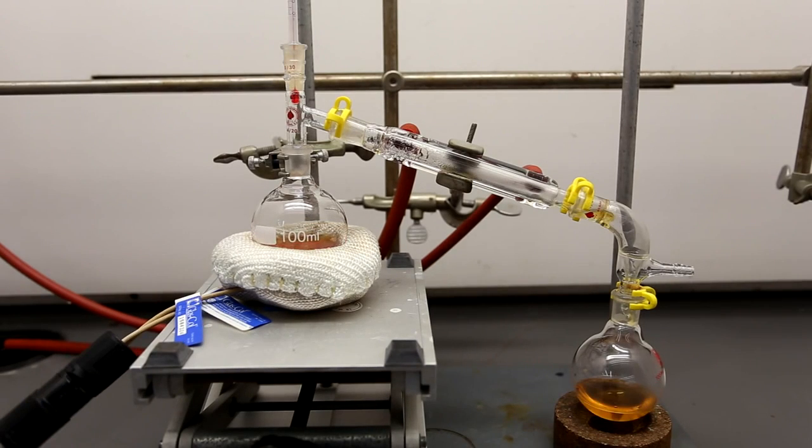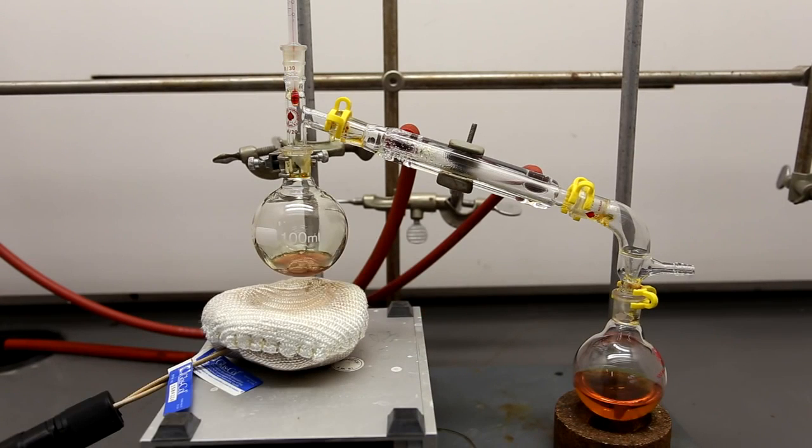At this point, you can replace the collecting flask and boil everything over, or simply remove the heat and collect the nearly pure 57% hydriodic acid that remains in the boiling flask.